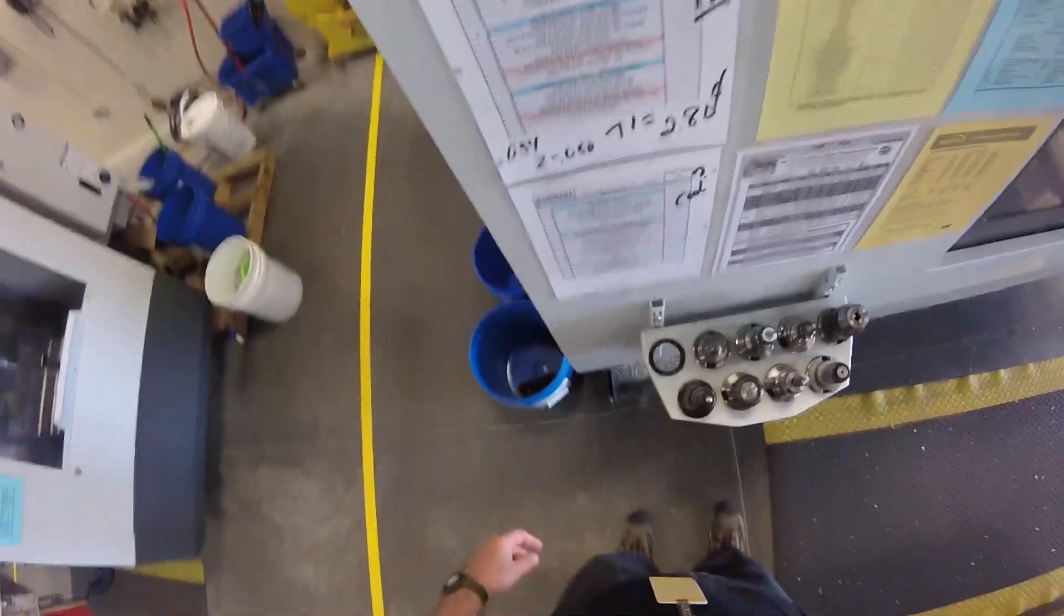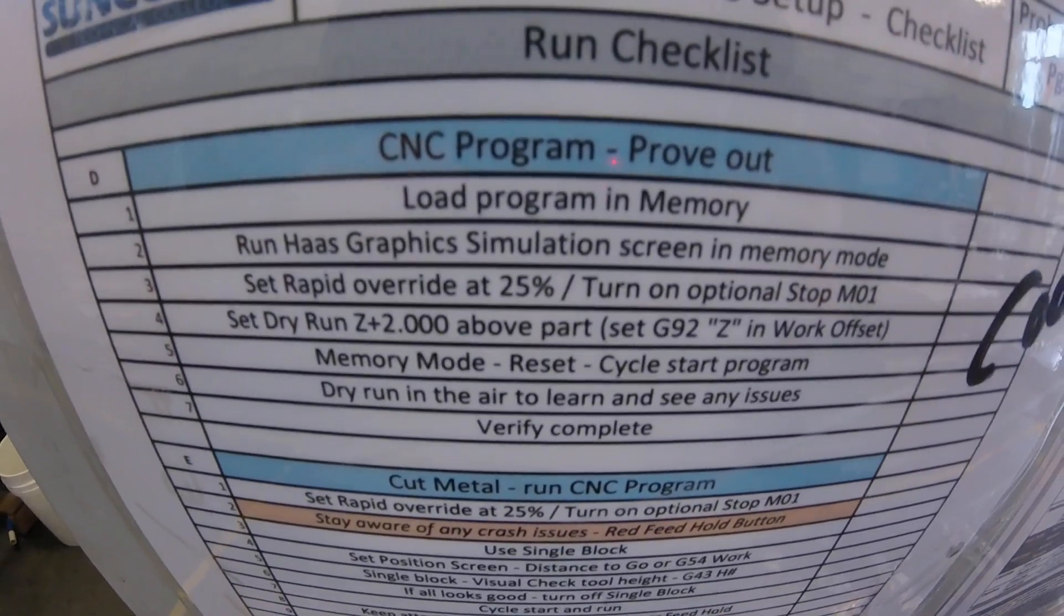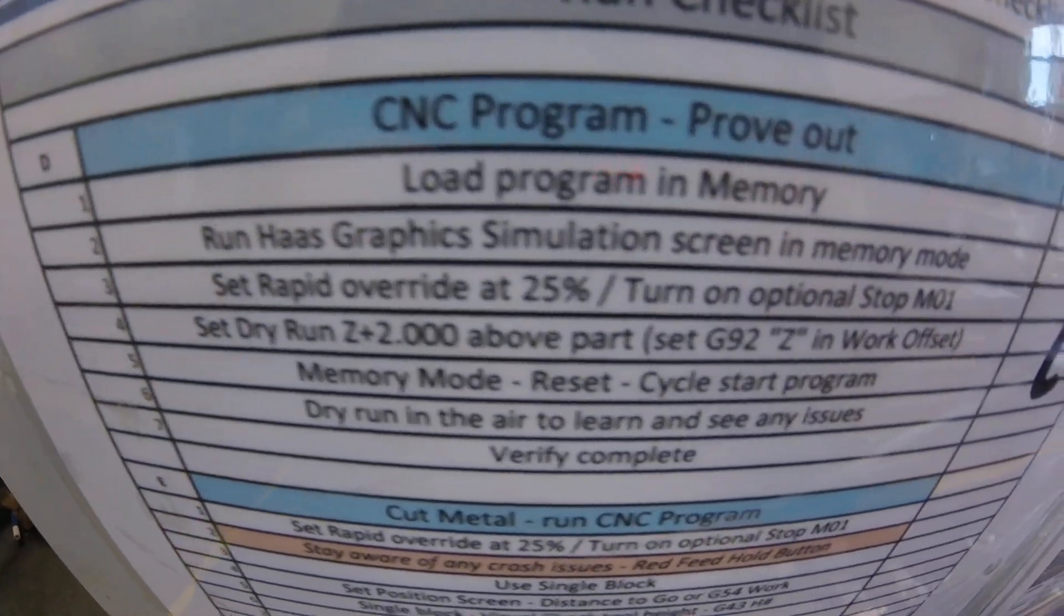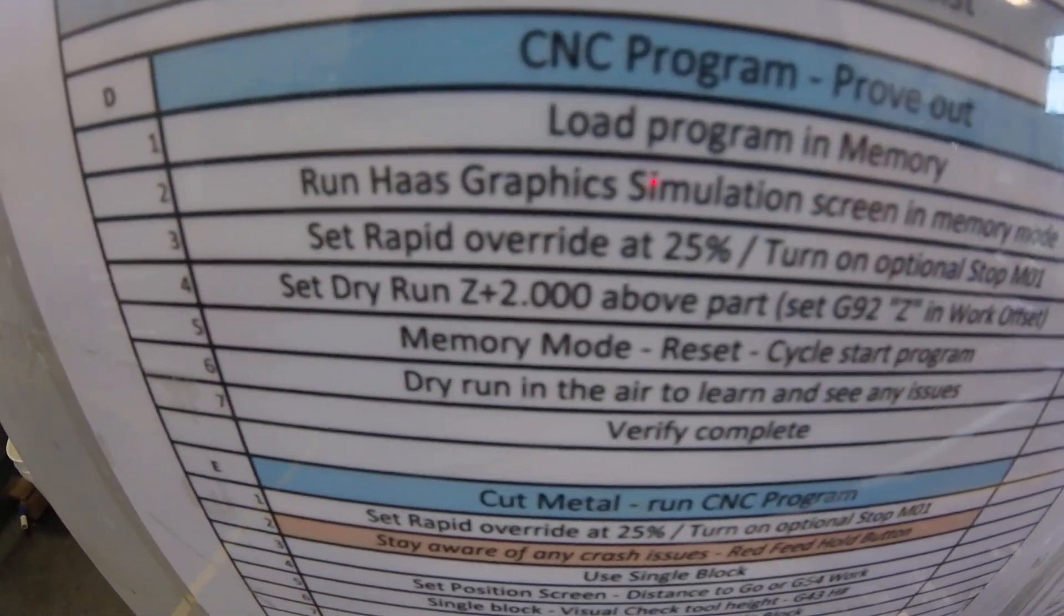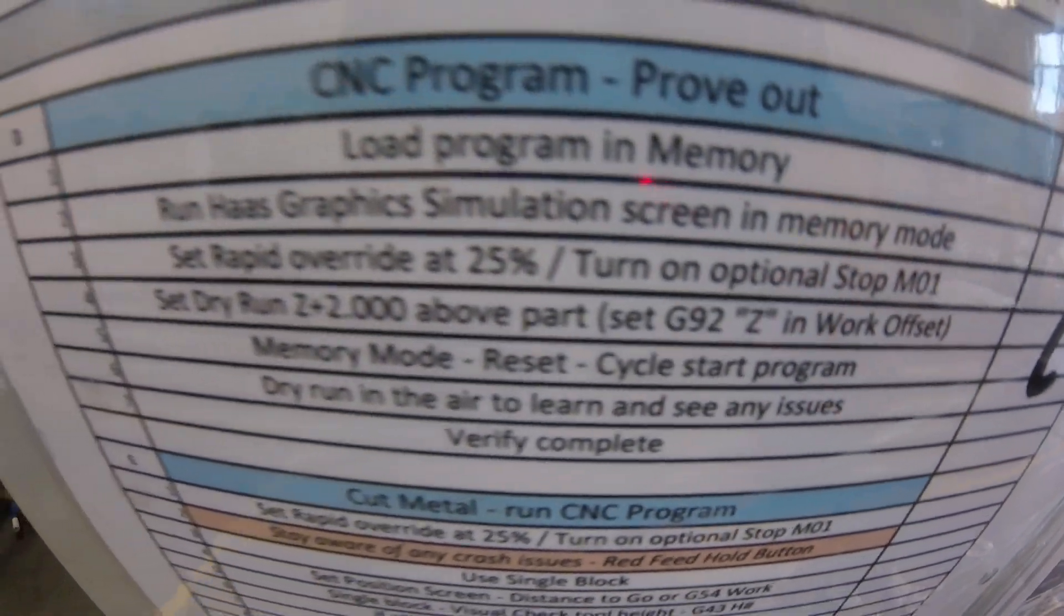So on prove out, we need a program, load program and memory. We're going to run the Haas graphics simulation. Then we're going to set the rapid override at 25% turn off. So we'll cover that in the next video. Thanks.